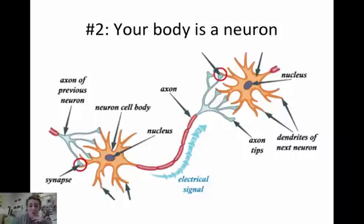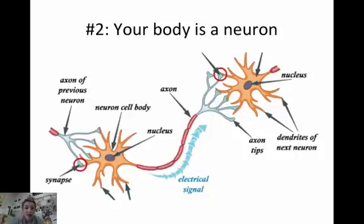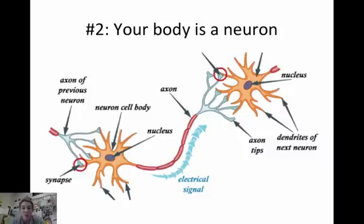Your body has hundreds of neurons. Key parts of the neuron: dendrites receive the message and send it toward the cell body. The axon takes it away from the cell body, and the axon is covered by the myelin sheath, a protective covering. The axon sends it to the terminal button — also called the axon terminal or axon tips, they're all the same.